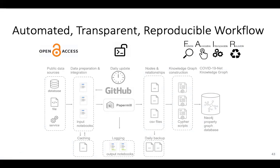When we started this project, we wanted it to be automated and expandable by others, with a transparent and reproducible workflow. We start with open access data from trustworthy public data repositories. We created a process that automatically extracts and integrates that information — integration is really where most of the work goes. With COVID, things change on a daily basis, so we have a daily update process with open source software to update, integrate, and upload information into the knowledge graph. We follow the FAIR principles — everything is open, easily accessible, reusable, and so forth.